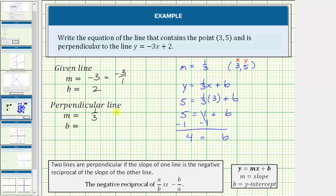Now we know the line perpendicular to the given line passing through the point (3,5) has a slope of 1/3 and a y-intercept of 4, which means the equation of the perpendicular line is y = (1/3)x + 4.